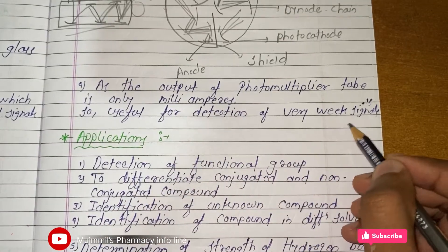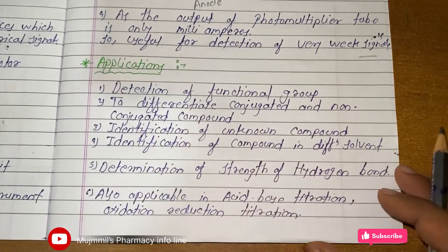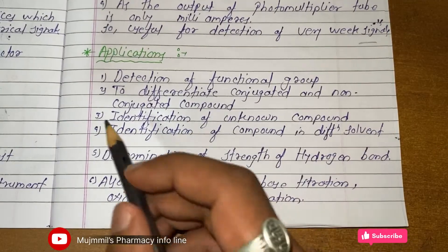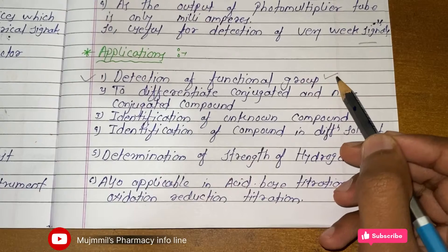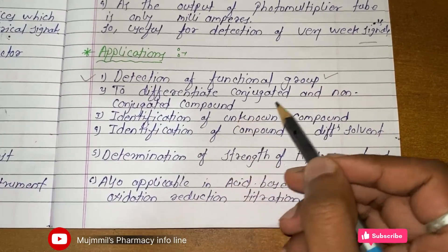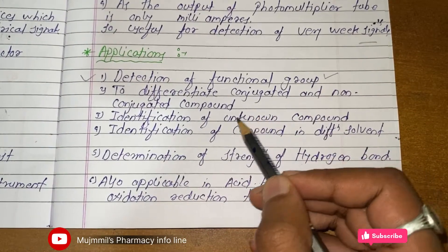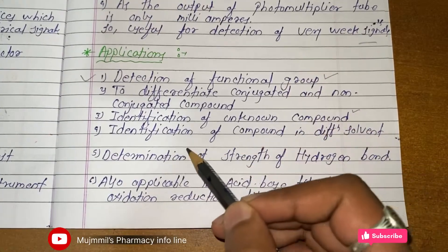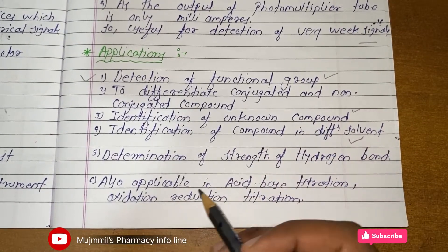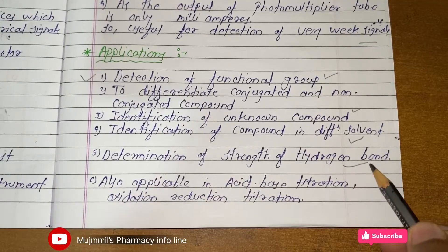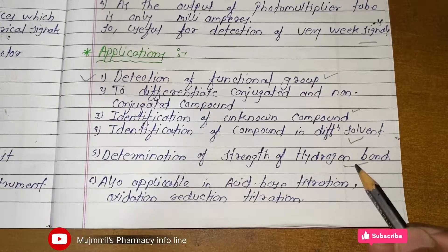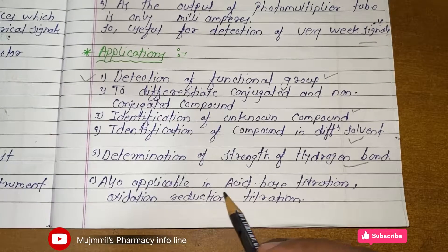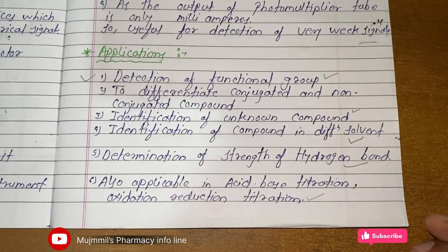Applications of UV-Visible spectroscopy: detection of functional groups in a compound; differentiating conjugated and non-conjugated compounds; identification of unknown compounds; identification of compounds in different solvents; determination of the strength of hydrogen bonds; and application in acid-base titrations or oxidation-reduction titrations.